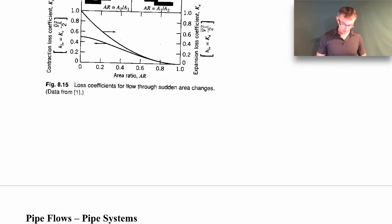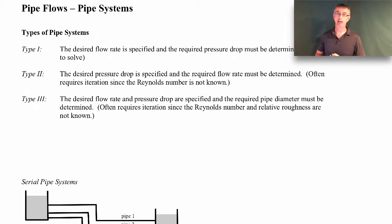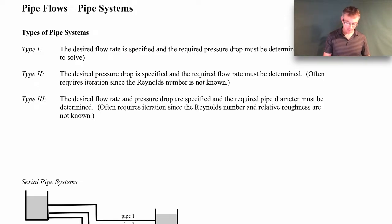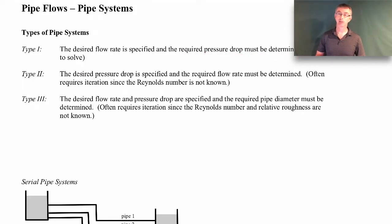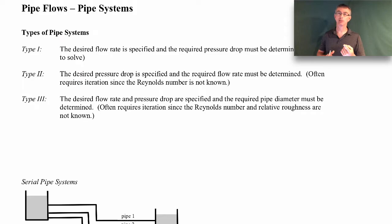Now let's talk about the different kinds of pipe systems we come across, classified as Type 1, Type 2, and Type 3. Type 1 pipe systems are ones where we're given the flow rate and have to determine the pressure drop. These are the easiest to solve because you know your pipe diameter and flow rate, so you can easily calculate the Reynolds number, the relative roughness, find your friction factor, and use the extended Bernoulli equation straightforwardly.